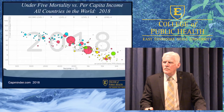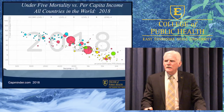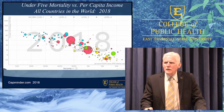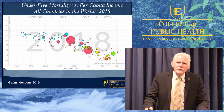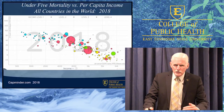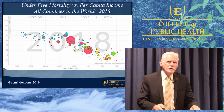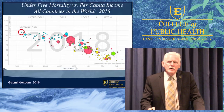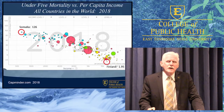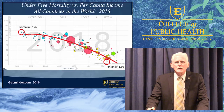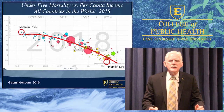This is a chart from Gapminder. Every dot is a country; the size of the dot represents the population — you can see China and India there in the middle in red. The color represents the continent: blue is Africa, red is Asia, yellow is Europe, green is the Americas. On the left side is under-five mortality — healthy countries are low, unhealthy countries are high. Across the bottom is per capita income — rich countries on the right, poor countries on the left. And there's a very strong linear relationship: kids are dying in poor countries and not dying in rich countries, pretty consistently across the board.